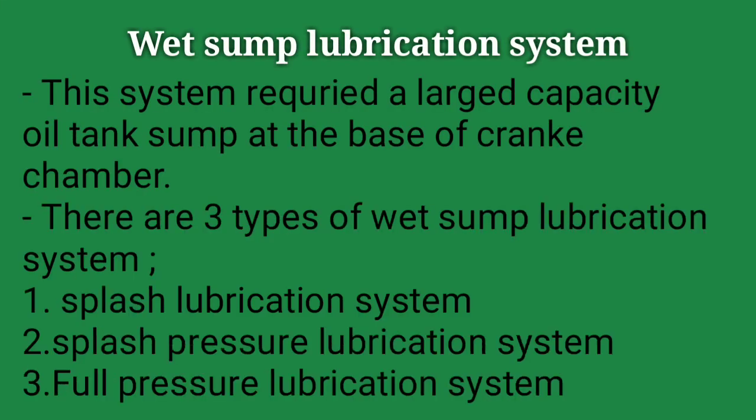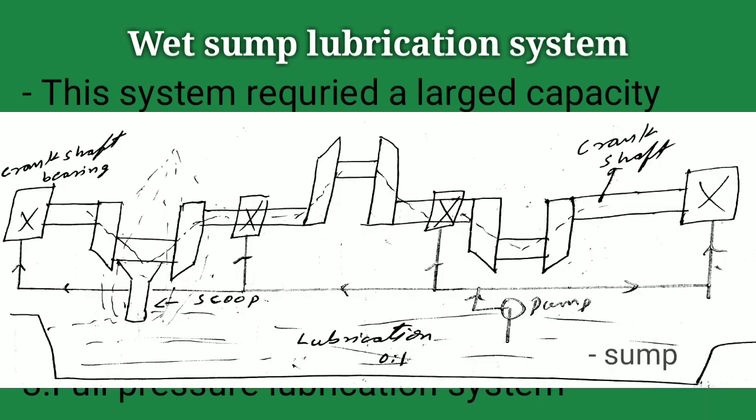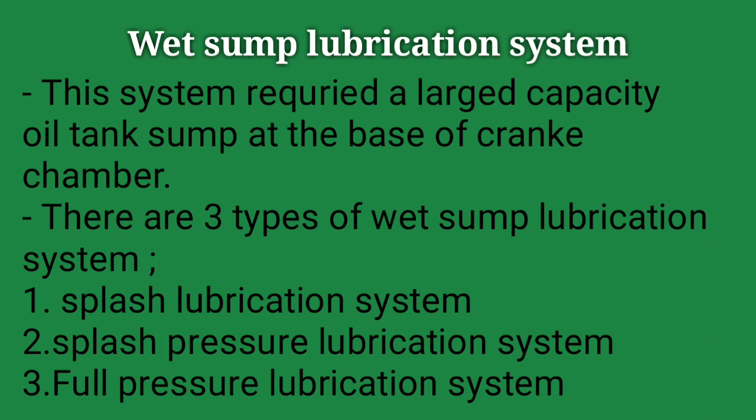The second one is wet sump lubrication system. In wet sump lubrication system, the lower part of the crank case is called the sump, which stores the lubricating oil, and this lubricating oil is supplied to the different moving parts of an engine.